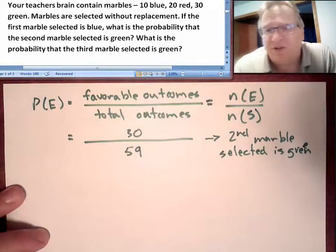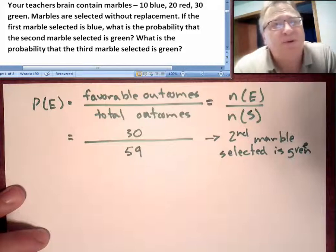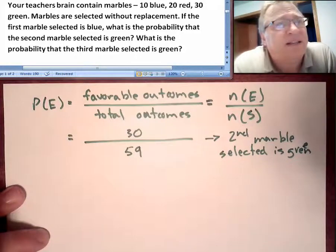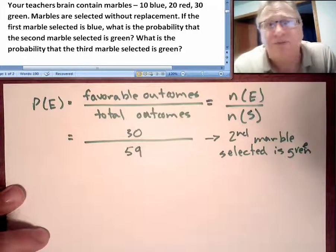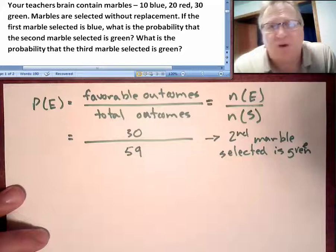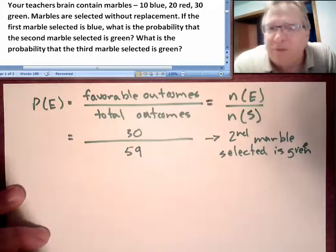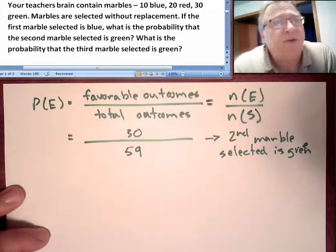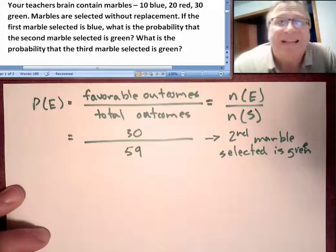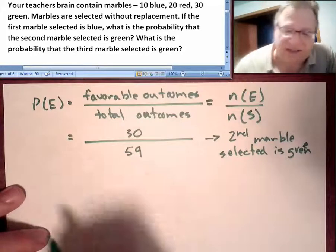We've now selected two marbles. The first one was blue, and the second time we've drawn a green marble. So we've pulled a blue marble and a green marble. We're on our third draw. The question is, what is the probability that the third marble selected is green?